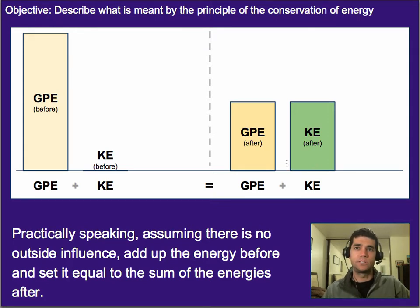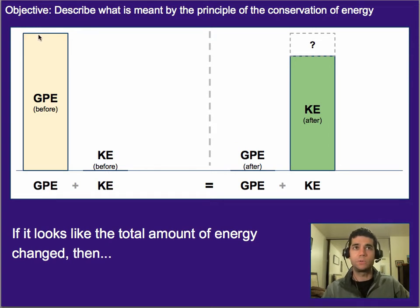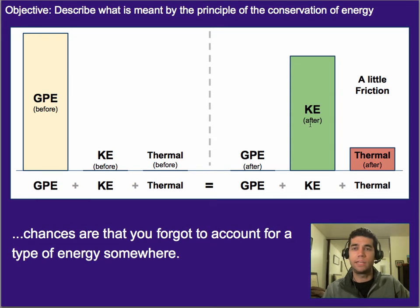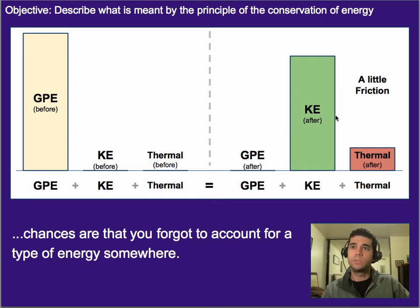Now, there are sometimes cases where we see something happen — such as we start with some potential energy, and the kinetic energy we see at the bottom of something going down a hill looks like it's less than the gravitational potential energy. In those cases, chances are you forgot to account for some type of energy — in this case, it would likely be thermal energy. An example would be somebody starting at the top of a hill on a bike, biking down, and at the end not having quite as much kinetic energy as they started with in potential energy. The reason is because a little bit is lost to friction, which turns energy into thermal energy or heat.